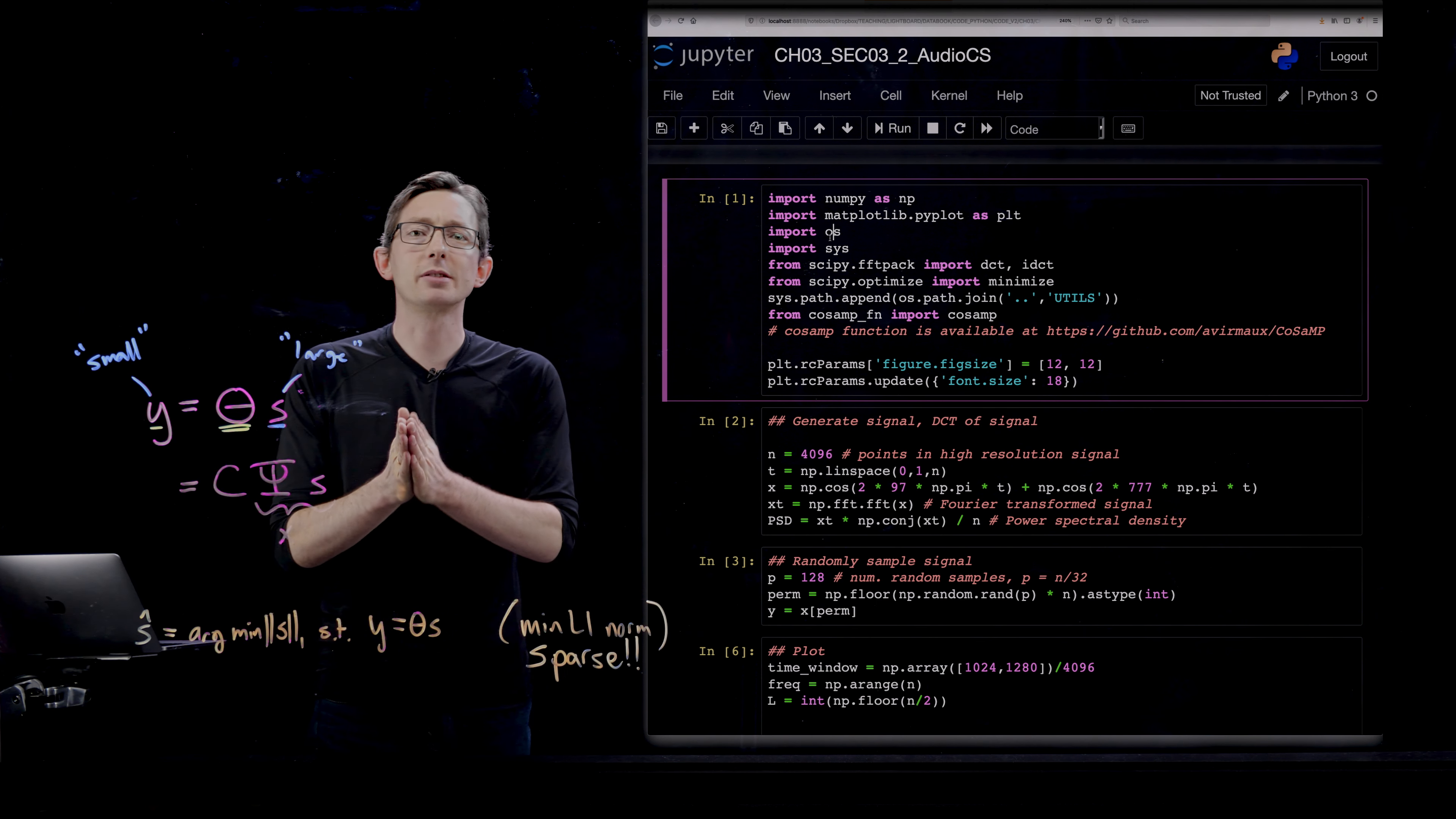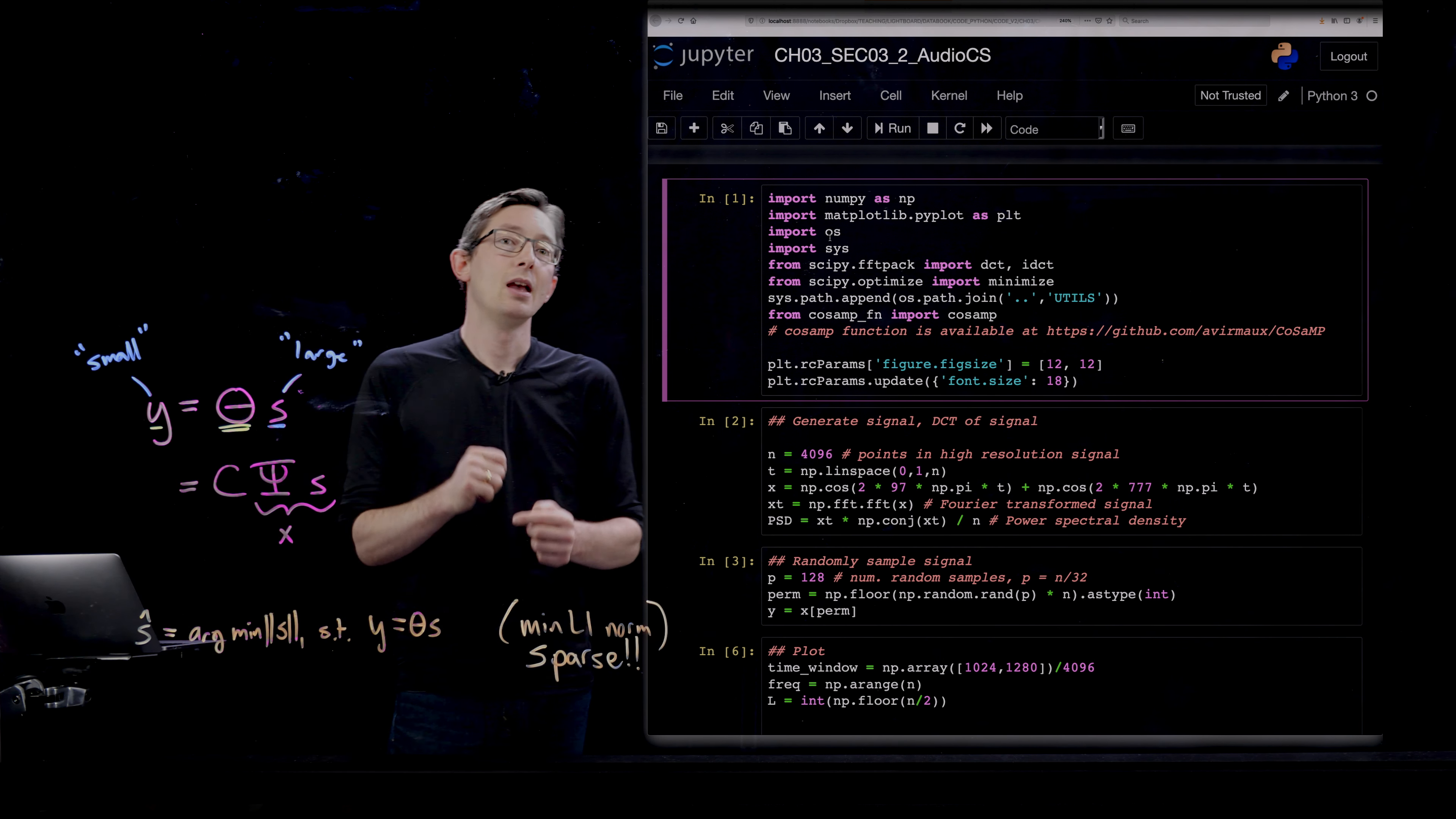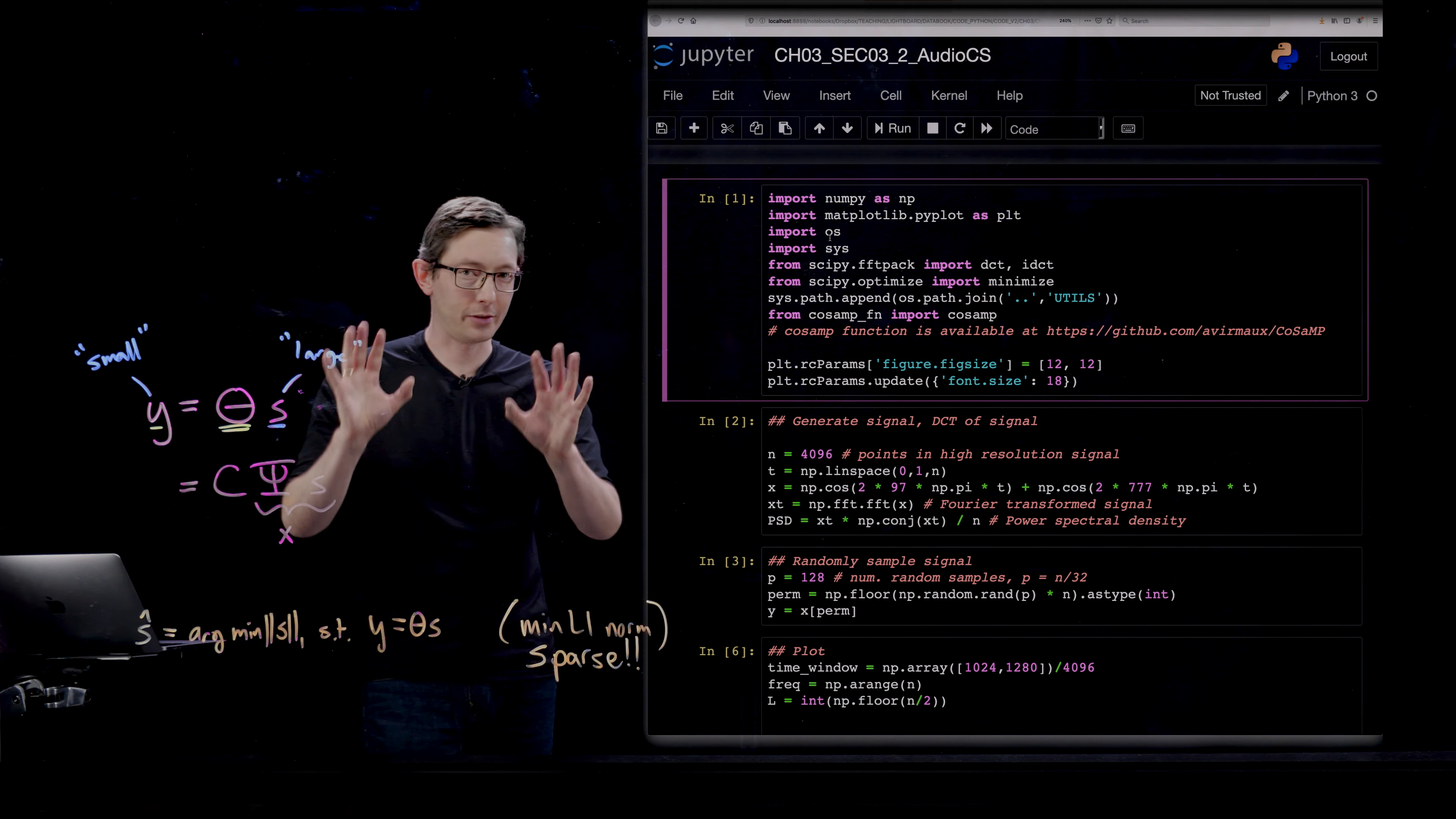And what we're going to do is create a very high resolution version of that signal at a sampling rate of 4096 hertz, or 4096 samples per second. And then what we're going to do is massively downsample that signal to get y, but we're going to do it randomly. This is super important and I'm going to walk through this a little bit.